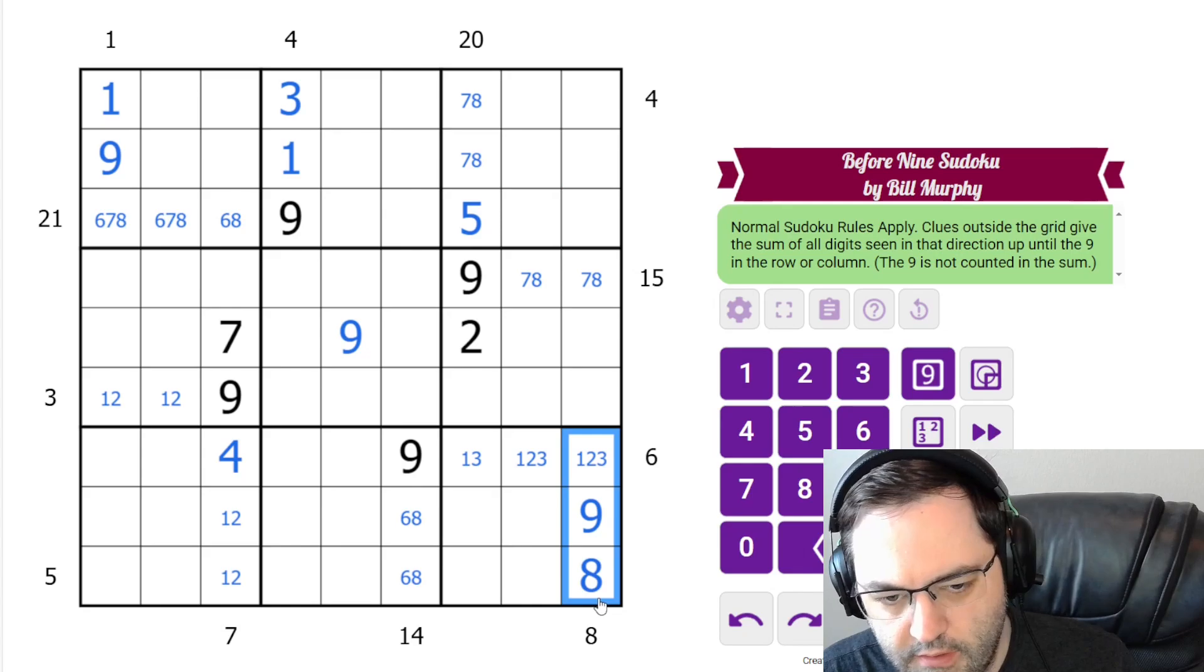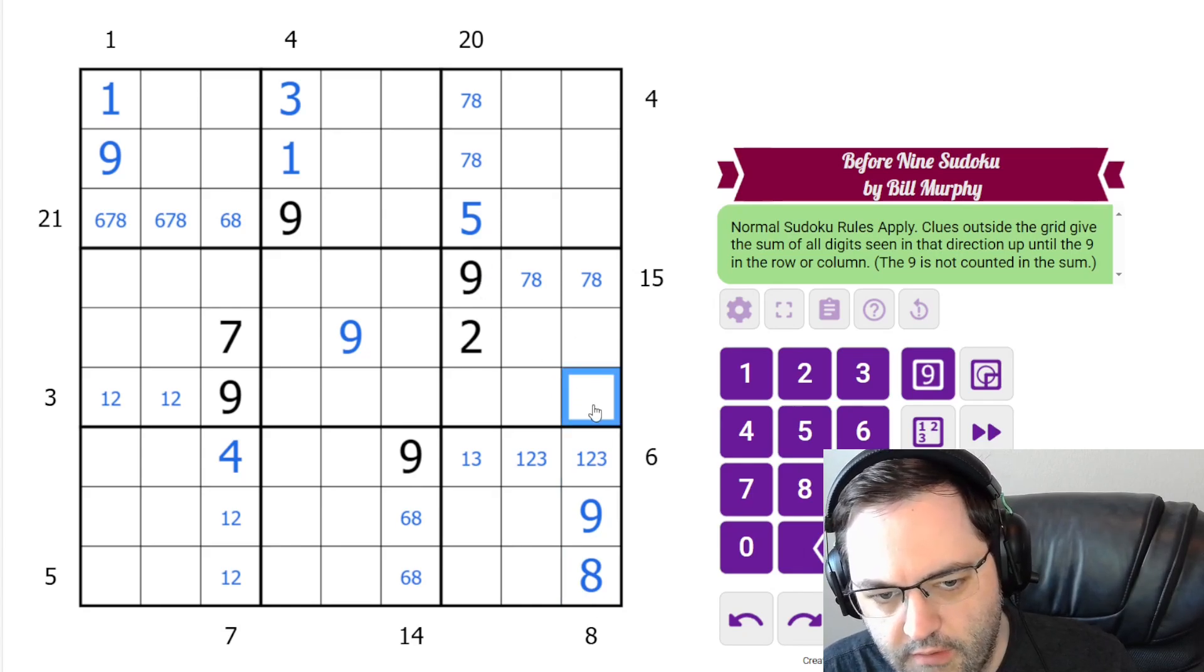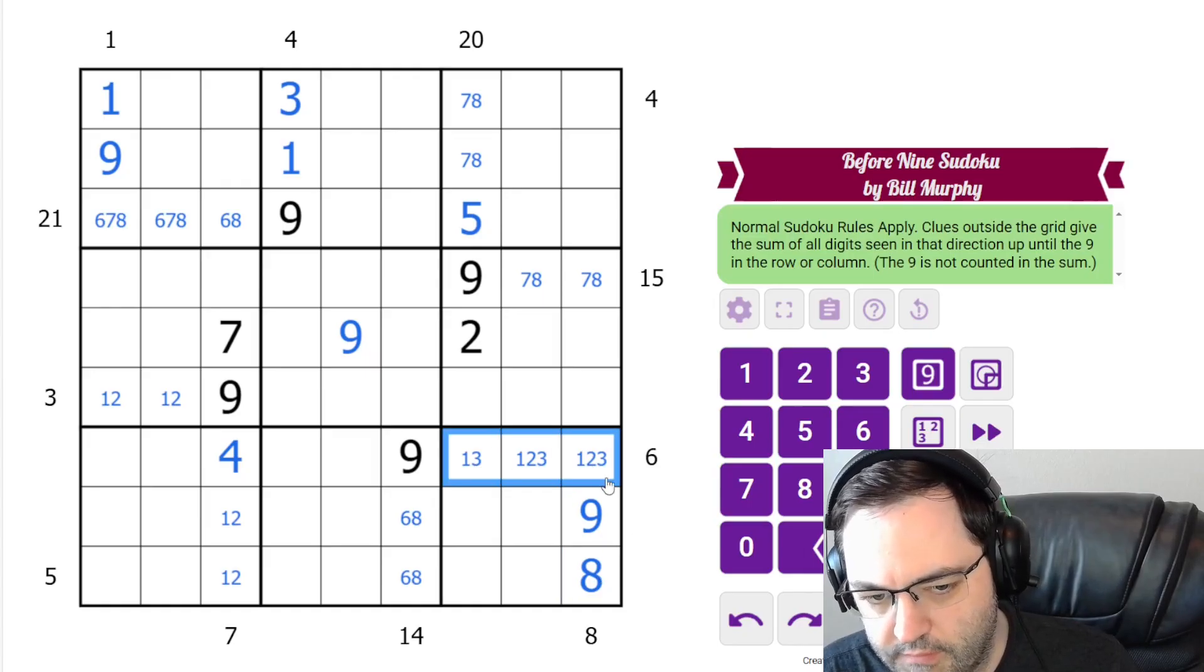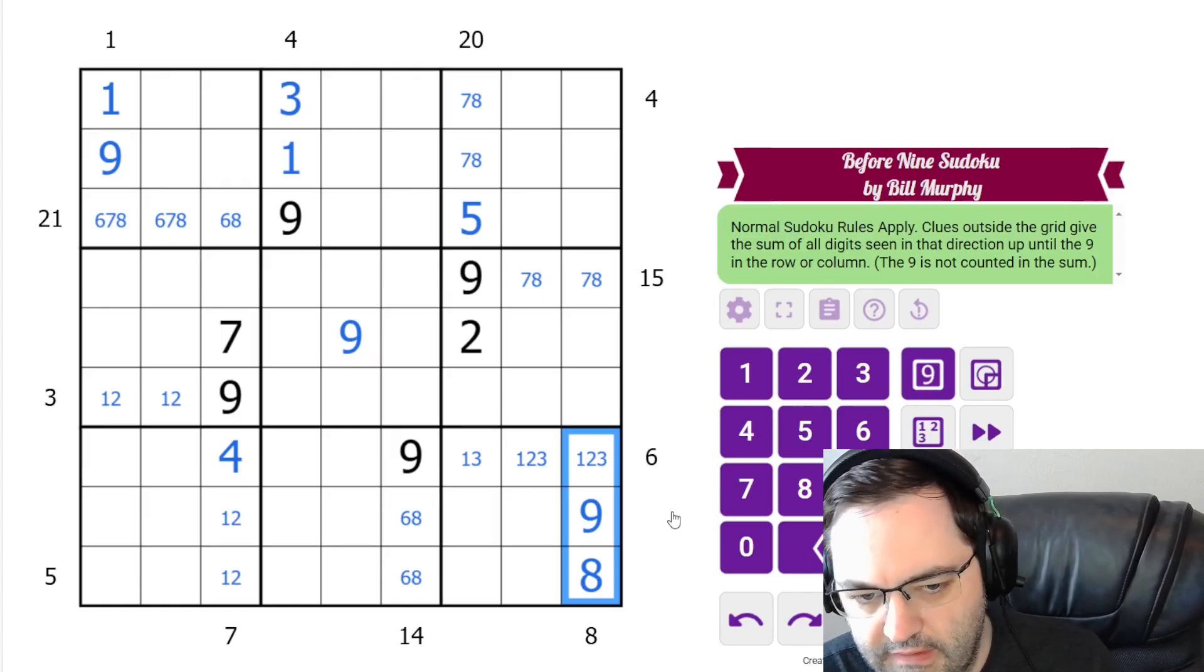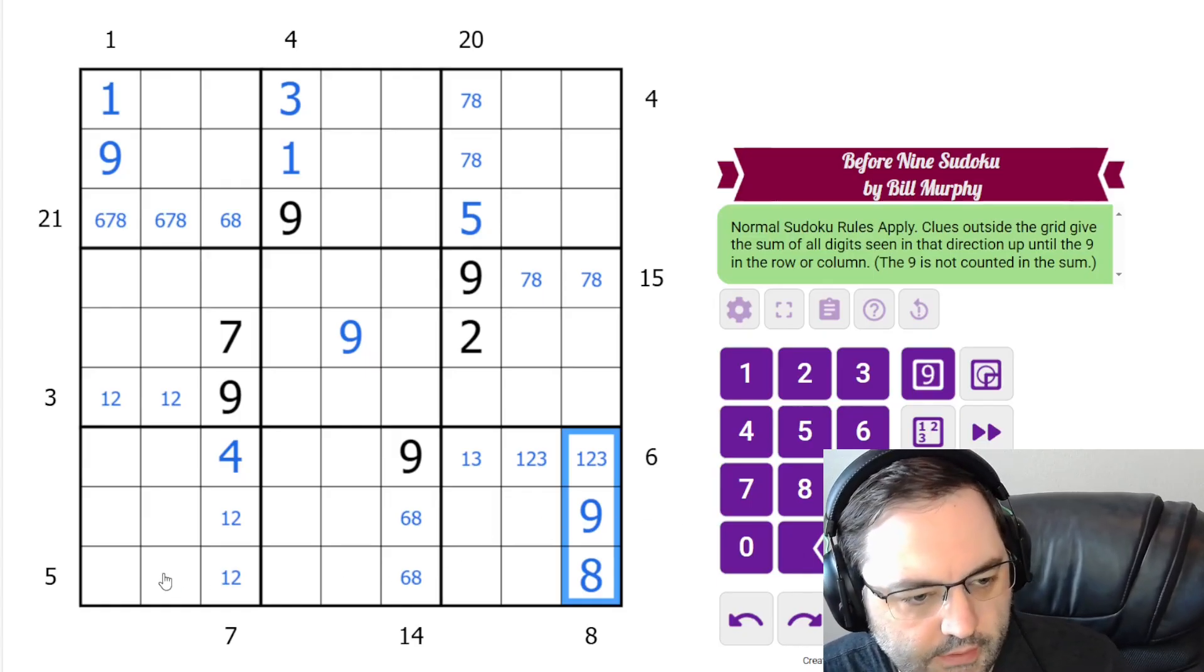Another way we could have seen that, though, is could the 9 be here, even if that wasn't there? No, because the lowest these could be is 4, 5, because of the 6. So the lowest these 3 cells could be is 10. So that's another way to see that.